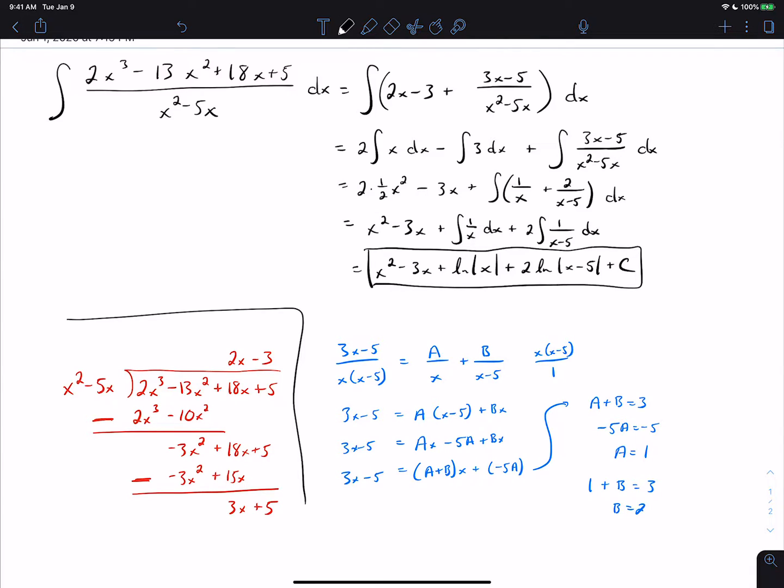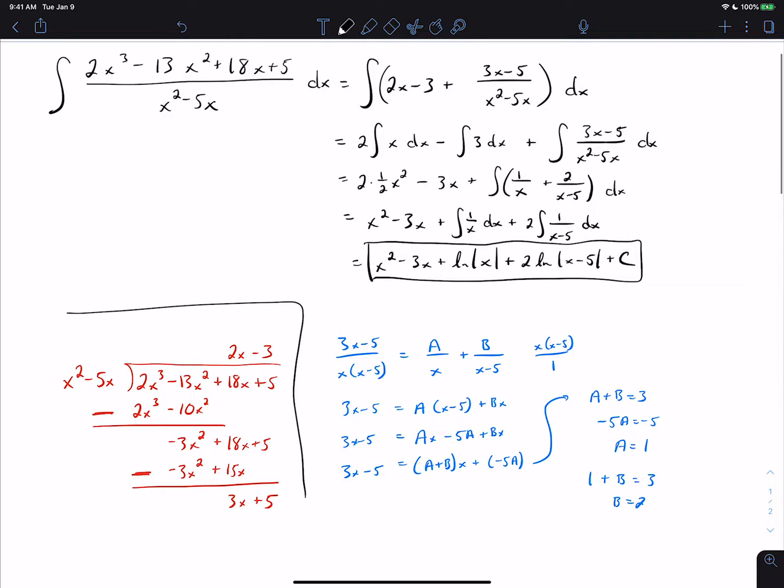So the only new part of this example is the long division part. That's something from precalculus courses that you do in algebra. So if the degree of the numerator is larger or if the degree of the numerator is the same as the degree of the denominator, we can start with long division, split it up like this, and then what's left might end up being partial fractions or might end up being something that we can do in a different way.